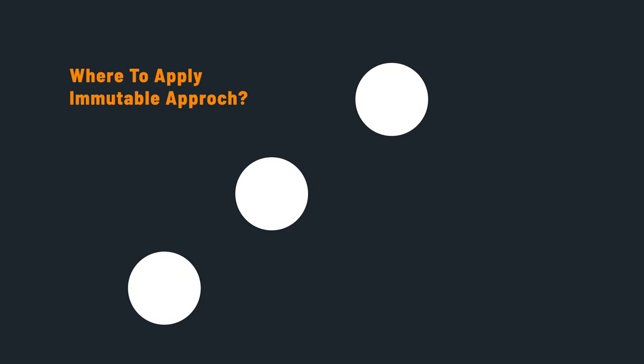Now let's talk about where we can apply the immutable approach, or what might still stay mutable. A long time ago, before VMs became popular, almost everything was mutable because we were running things on real servers. Everything was mutable — there was not much to choose from. Some people and companies were using immutable approaches, but that was an exception more than a rule. And that's the era of configuration management tools.